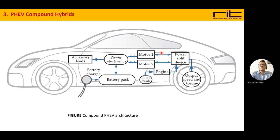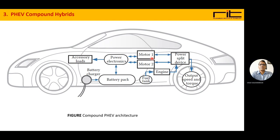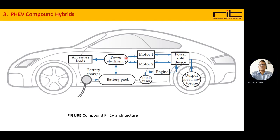The next is the compound hybrid, that is, the plug-in hybrid electric vehicle with compound hybrids. Motor 1 and Motor 2 are connected to the power split device, and the engine is also connected to the power split device. The suitable series mode or parallel mode is selected through this power split, and the vehicle can operate in compound hybrid mode. As usual, the battery is charged from the external power source.